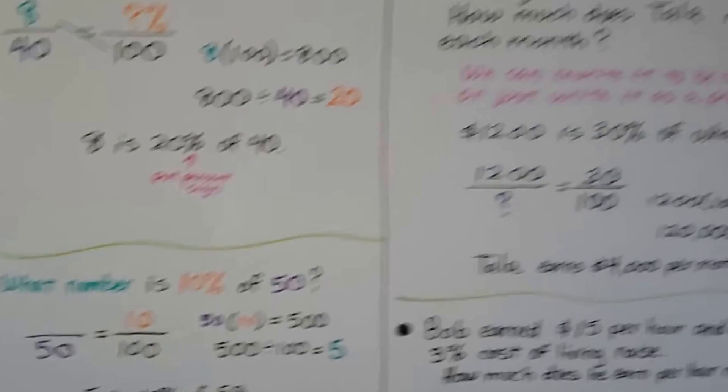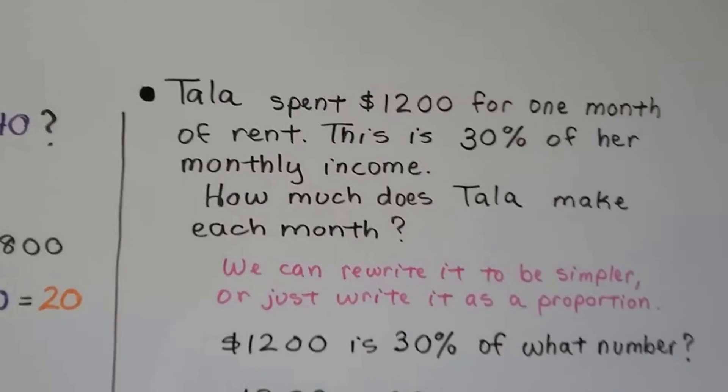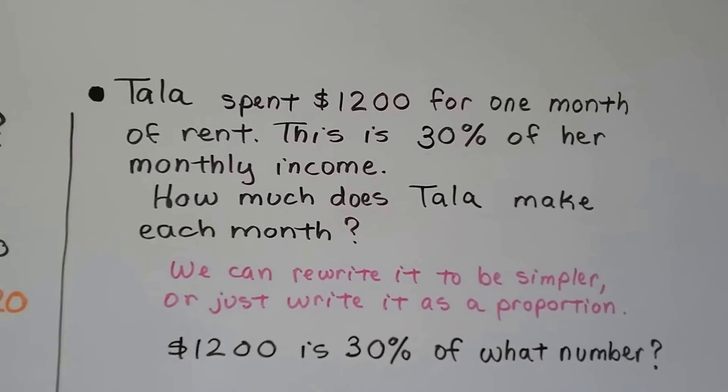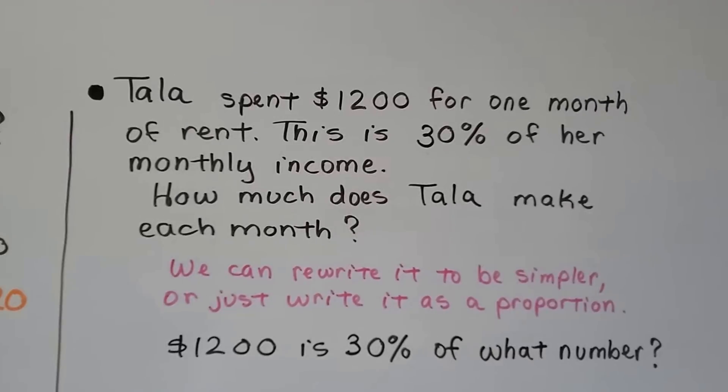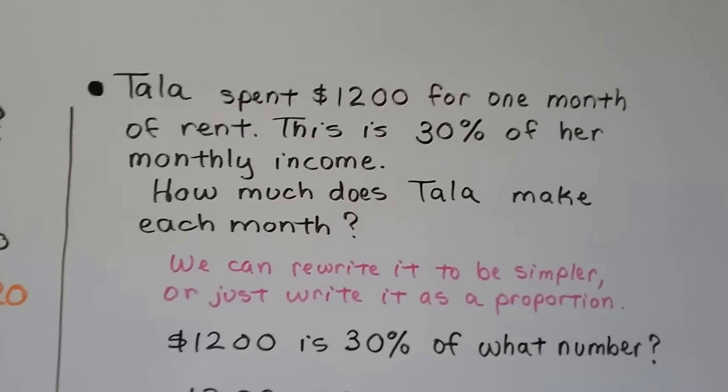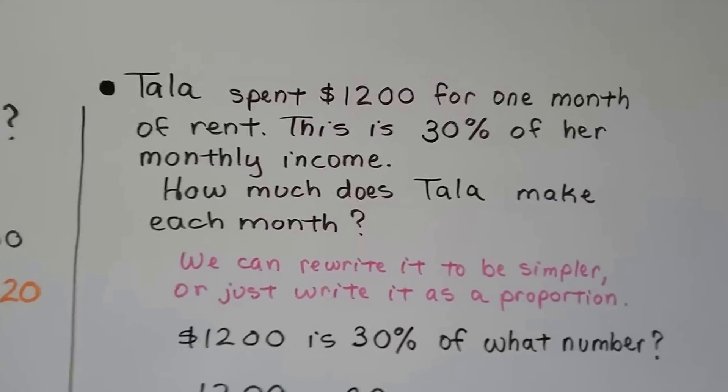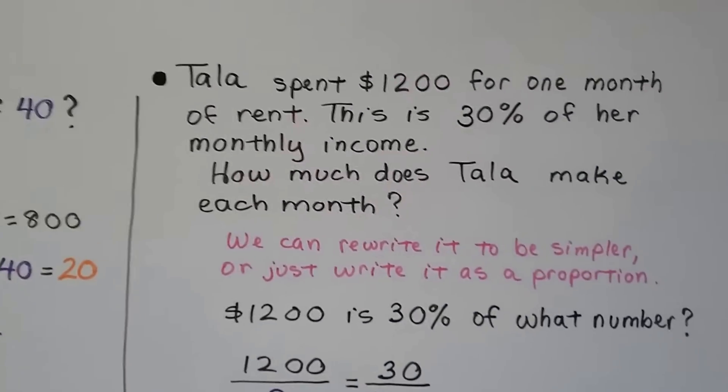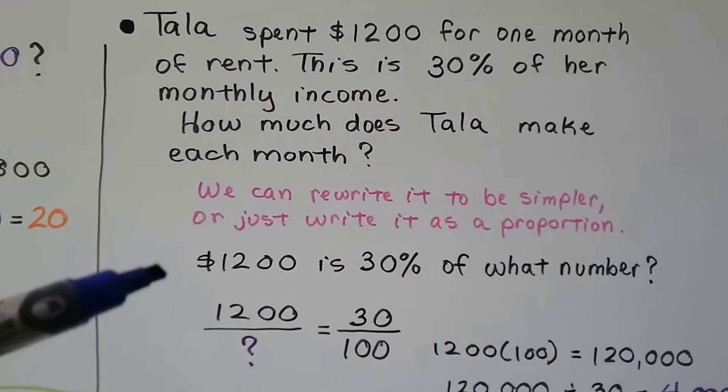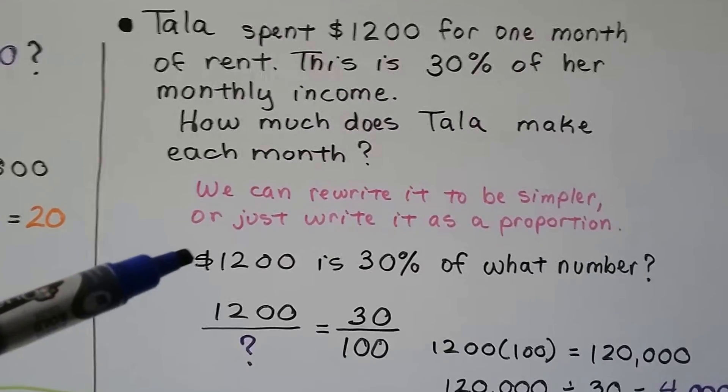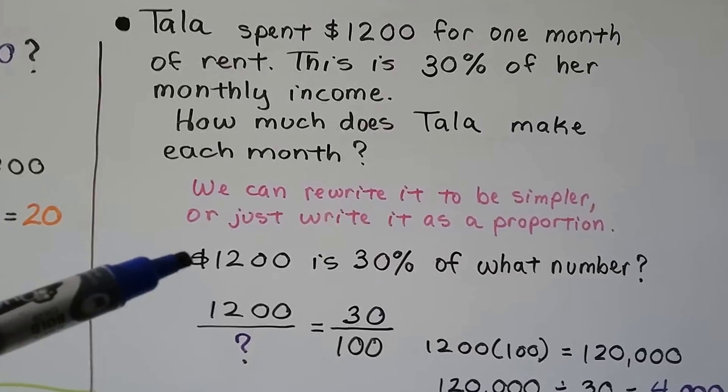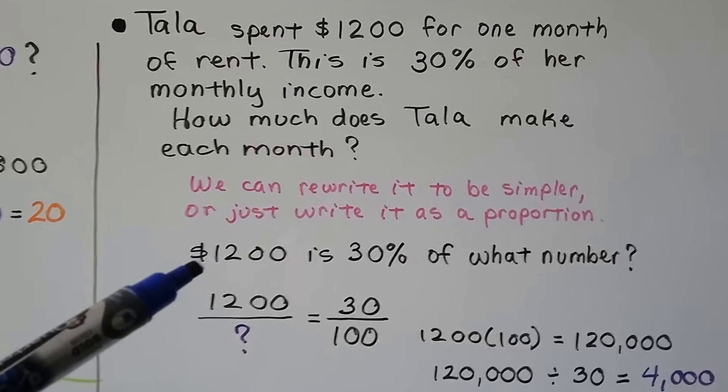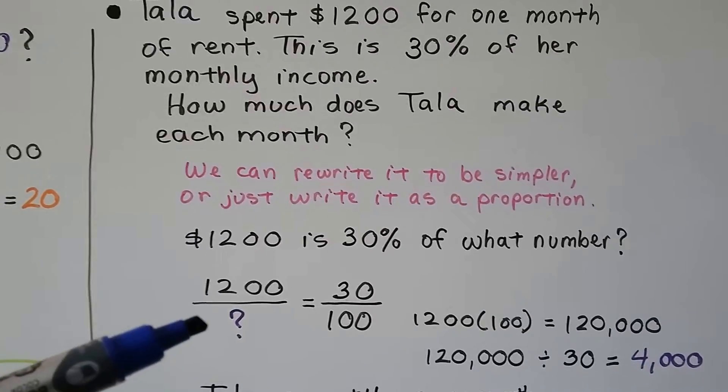Let's try a couple word problems. Tala spent $1,200 for one month of rent. This is 30% of her monthly income. How much does Tala make each month? So we can rewrite this to be simpler. We can rewrite it like these sentences, or we could just put it straight into the proportion. So I rewrote it to be simpler. It's 1,200 is 30% of what number? That's basically what that says. If it helps you to rewrite it as a sentence like this, then do it.